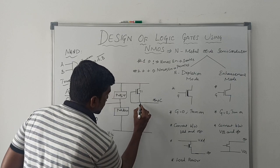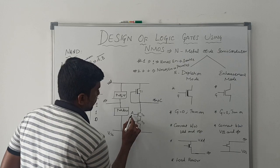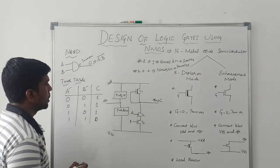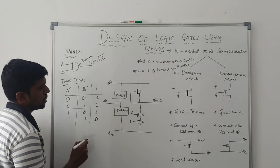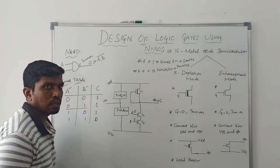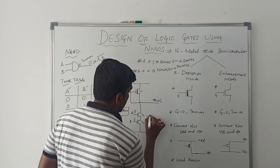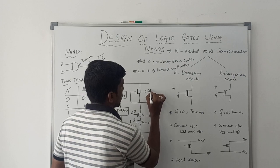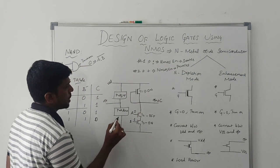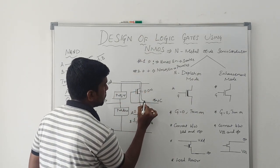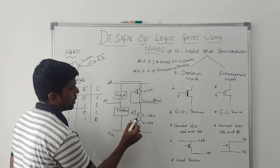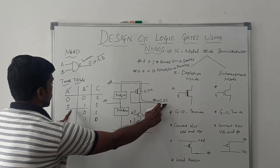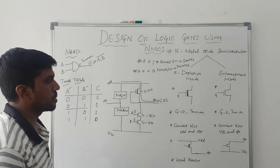The pull-down network is connected between VSS and output. Input variable of T2 is A, and input variable of T3 is B. Now I verify the output using the truth table. Taking input A=0, B=1: T3 transistor turns on, but T2 transistor is in high impedance — there is no current flow path. So VDD is directly connected to output, and C value is 1. The logic output is 1, which matches the truth table value.